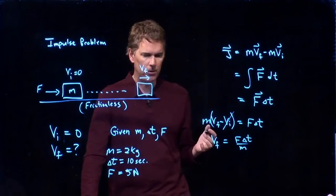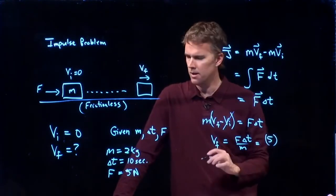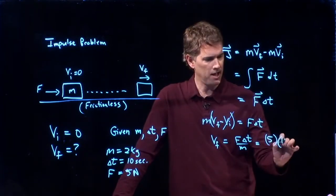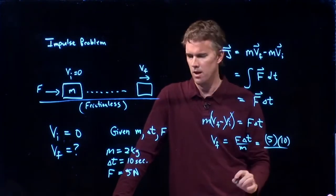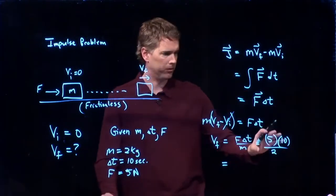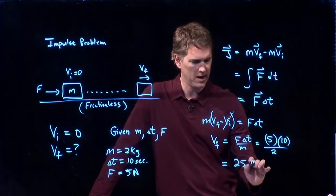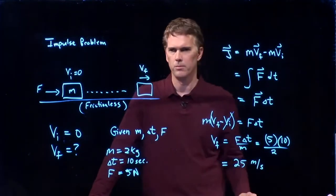And now we know all those numbers. Right? f is 5 newtons. Delta t is 10 seconds. m is 2 kilograms. All of those are SI units, so we don't have to write the units down every time. And we get 25 meters per second.